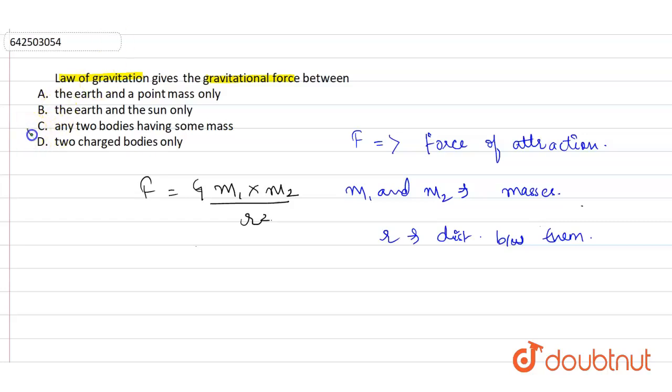And this is applicable to all bodies having some mass, right? Hence the answer is any two bodies having some mass. Law of gravitation gives the gravitational force between any two bodies having some mass.